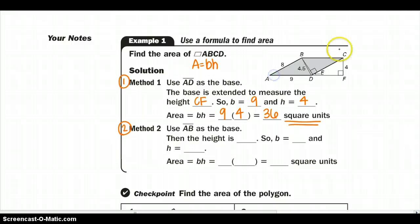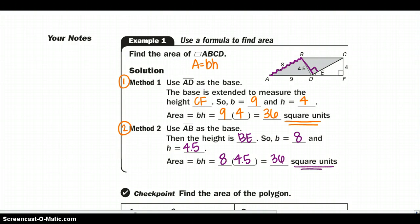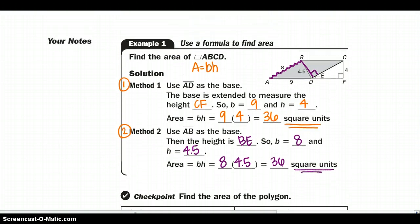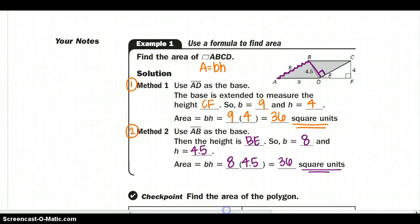Next, let's see if we get the same answer by using AB as my base. My height to AB, the perpendicular distance to my base is going to be BE. So the base will be 8, and my height will be 4.5. I'll just plug those back into my equation, and again, I get 36 square units. Alright, again, if you need to slow it down or stop, please feel free to do so.